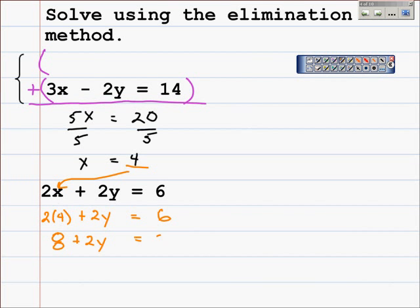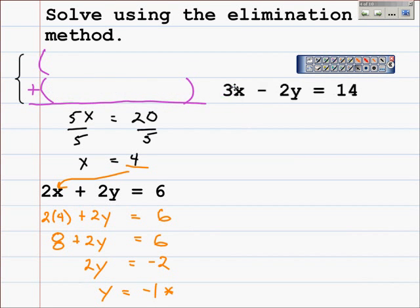Subtracting 8 from both sides, giving 2y equals negative 2. Dividing both sides by 2, y equals negative 1. That's one part of our solution. There's two parts; we're looking for an ordered pair. Remember the ordered pair is going to satisfy both of these equations. Now we need to take this result, y equals negative 1, and substitute it back into one of the original equations. Since we've used 3x minus 2y equals 14, I'll use it now.